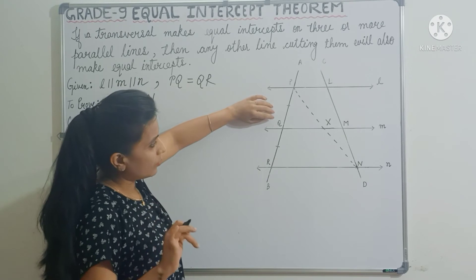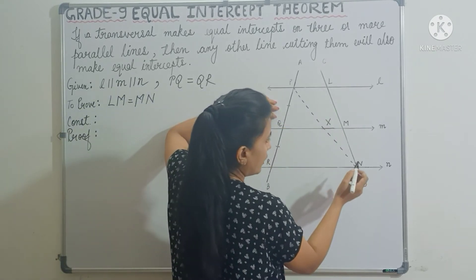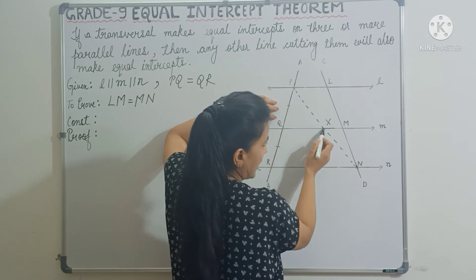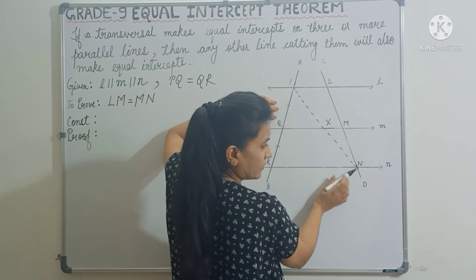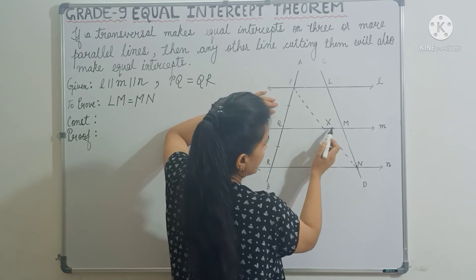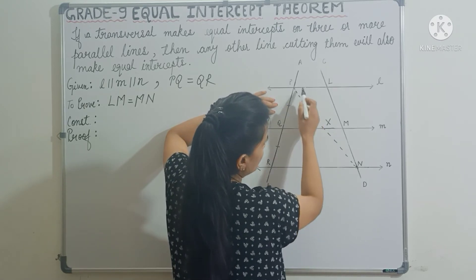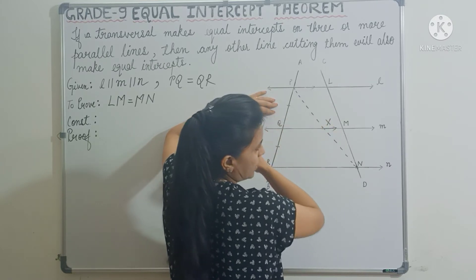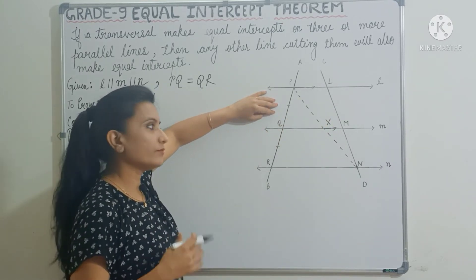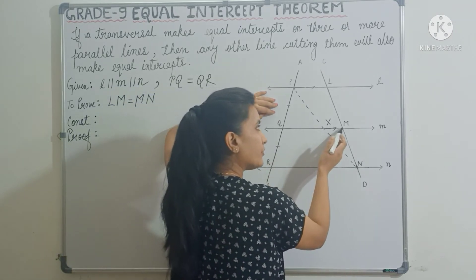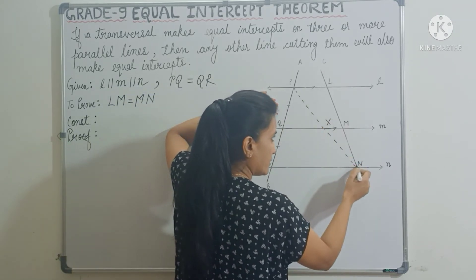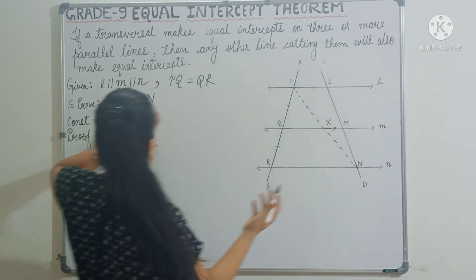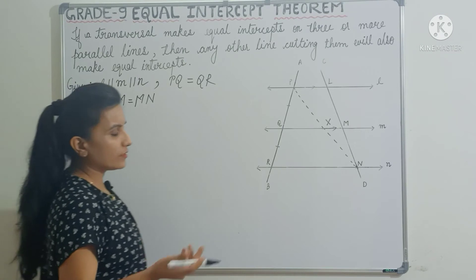Now take the next triangle — triangle NPL. In this triangle, X is the midpoint of PN, as we just proved. And XM is parallel to PN. So again, from the converse of the midpoint theorem, XM will bisect LN. Therefore LM will be equal to MN. And this is exactly what we had to prove. The proof is done.